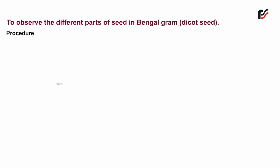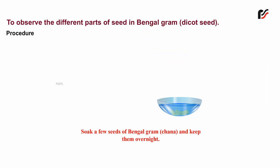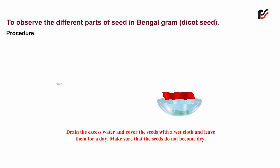Procedure: Soak a few seeds of Bengal gram (chana) and keep them overnight. Drain the excess water and cover the seeds with a wet cloth and leave them for a day. Make sure that the seeds do not become dry.